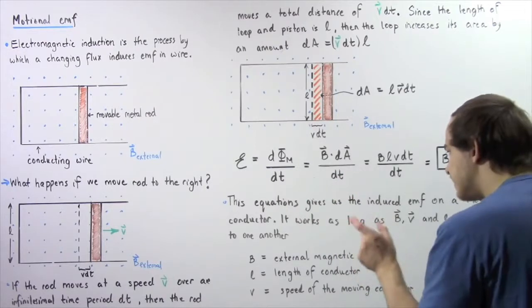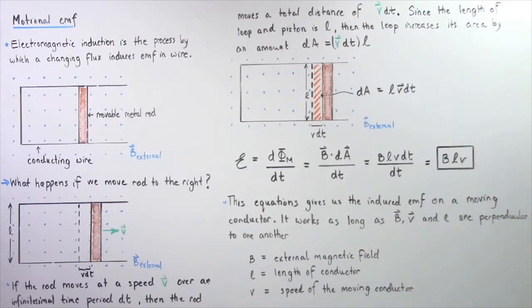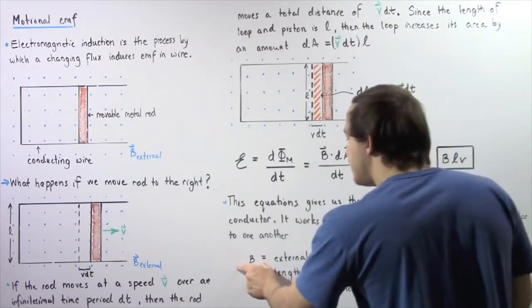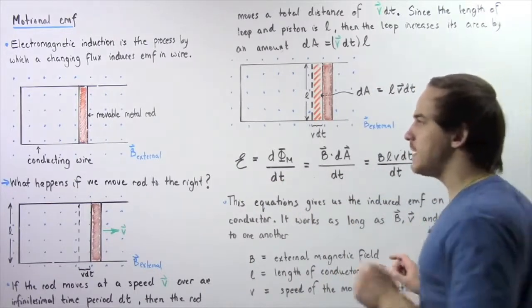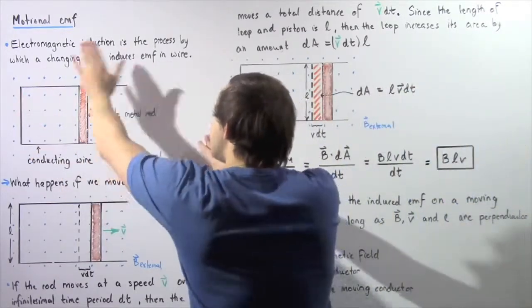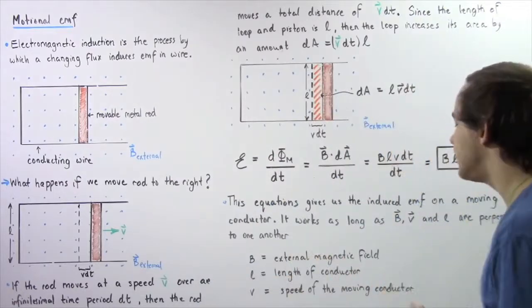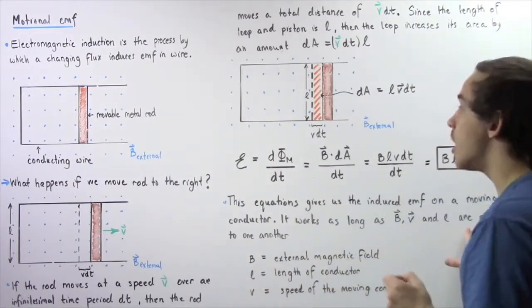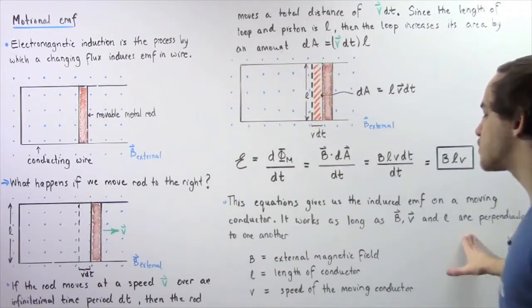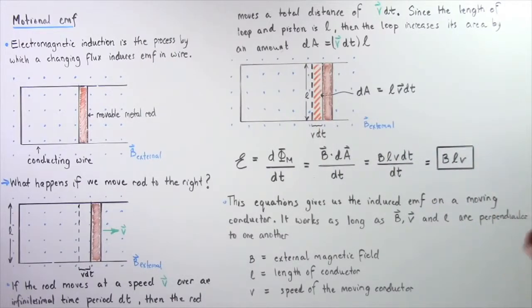This equation gives us the induced EMF on a moving conductor, and it works as long as our B, our V, and L are mutually perpendicular with respect to one another. Notice that B represents the external magnetic field in which our conductor is found, the L is the length of our conductor, in this case this distance, and the V represents the speed of our moving conductor.